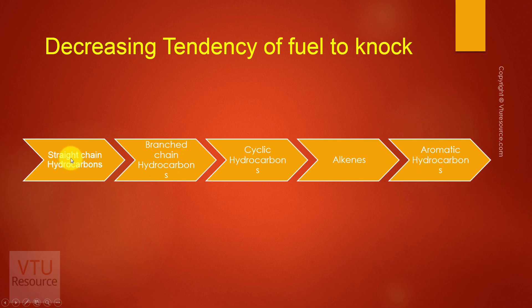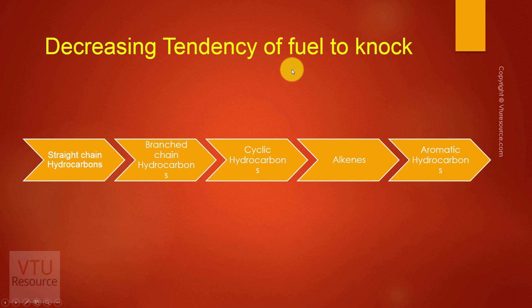If only straight chain hydrocarbons are used, the knocking tendency of the fuel is very high. In order to decrease knocking, part of the fuel is converted to branched chain hydrocarbons, part to cyclic hydrocarbons, part to alkenes, and part to aromatic hydrocarbons. This modified fuel is then supplied to petrol pumps and used in our automobiles.